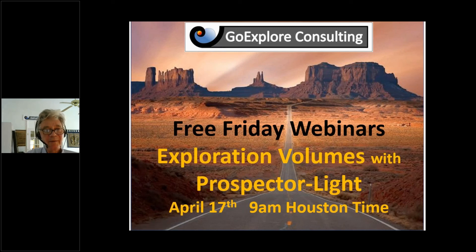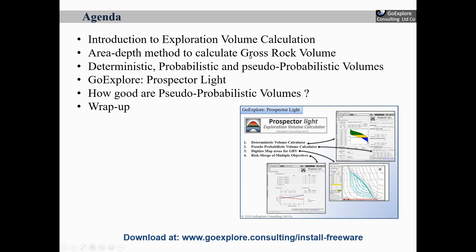So I've got a little agenda. First of all, an introduction to exploration volume calculation — just a general introduction of how the calculation is done. The area-depth method to calculate gross rock volumes — that is the method this tool applies. Then I'll talk about deterministic volumes, probabilistic volumes, and pseudo-probabilistic volumes, and the differences in how you calculate those. I'll have a look at Prospector Lite, then wrap up. This software is freeware, and you can download it at the site shown at the bottom of this slide.